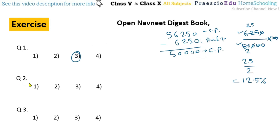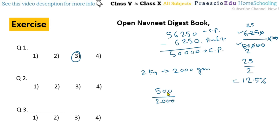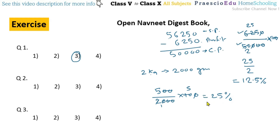Question number 2: How many percent is 500 grams of 2 kg? Since 2 kg equals 2000 grams, we calculate 500 divided by 2000, multiplied by 100. After cancelling zeros, we get 25%. This is option number 2. Always remember the units should be the same — since we had kg and grams, we converted kg to grams before calculating.